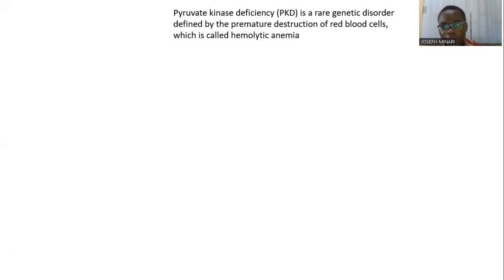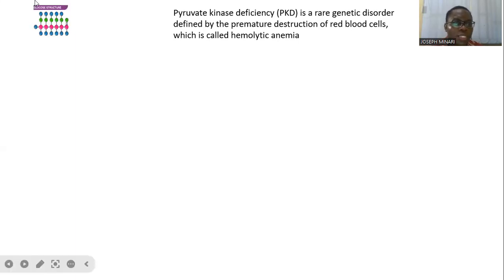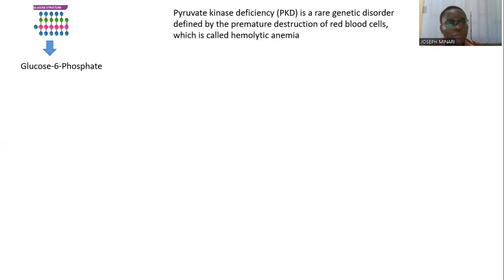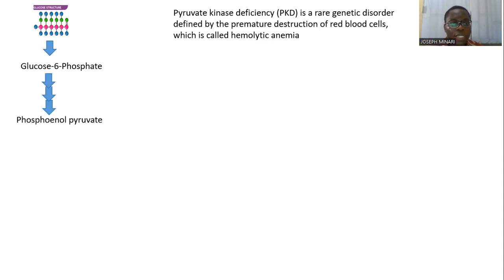How does this hemolytic anemia come to play in the pathway? In the glycolytic pathway, we have glucose being converted to glucose-6-phosphate, and through a series of reactions, glucose-6-phosphate gets to phosphoenolpyruvate, and the phosphoenolpyruvate is being converted to pyruvate.